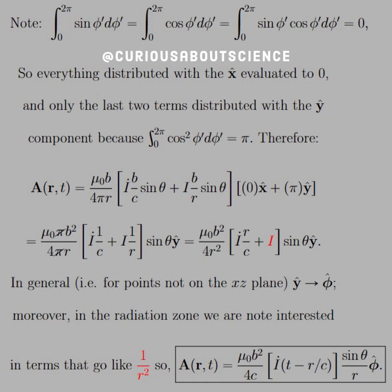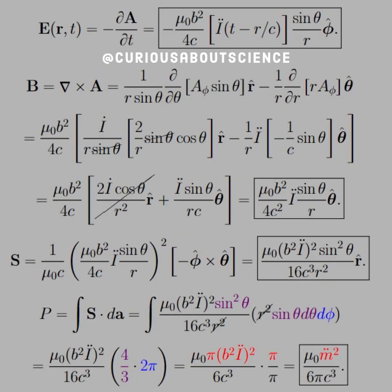So in general, for points not in the x, z plane, we have y hat goes to phi hat, and moreover, in the radiation zone, which is where we're interested in, since that I that's in red has an r squared with it, that does not carry the radiation. That dies out too quick. So we have to get rid of that, and all we're left with is the I dot component. And what we see is that the vector potential is mu naught B squared over 4c, I dot evaluated at the retarded time, or t naught, which is t minus r over c, sine theta over r. So this looks pretty approximate, in my opinion, pretty close.